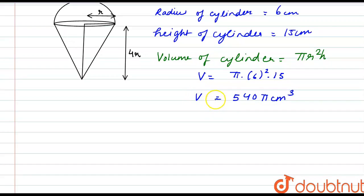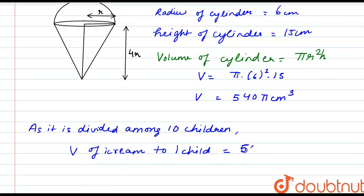As it has to be divided among 10 children, now we can write that as it is divided among 10 children. So the volume of ice cream to one child will be 540 pi divided by 10.